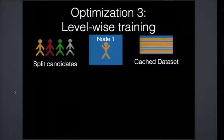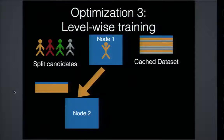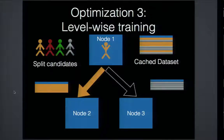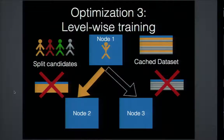The third optimization reduces passes over the input data set. When constructing a decision tree, we choose a split at node one, then take a filtered version of the data satisfying the splitting condition and repeat. Instead of moving these data structures in and out of memory, we work on top of the cached input data set by applying filters on top of it.